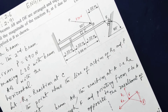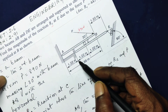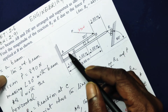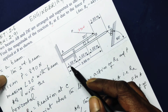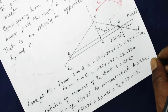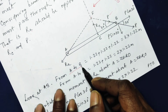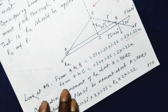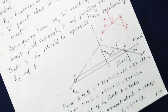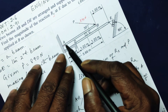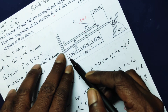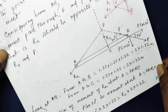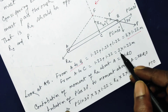From the original diagram, each segment is 1.22 meters long. Therefore, the total length from A to B is 3 times 1.22 meters. The distance from A to C is 2 times 1.22 meters.